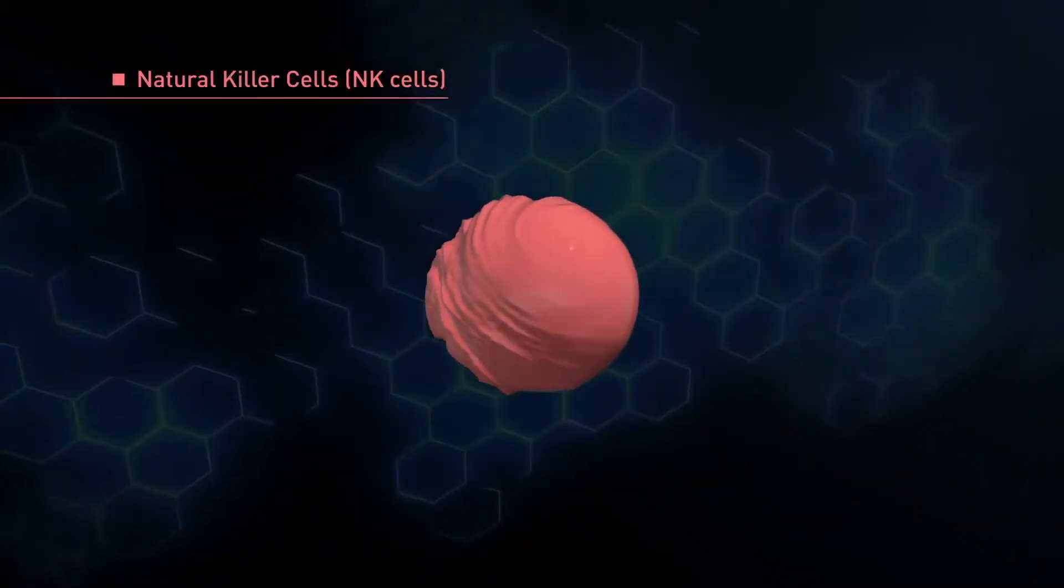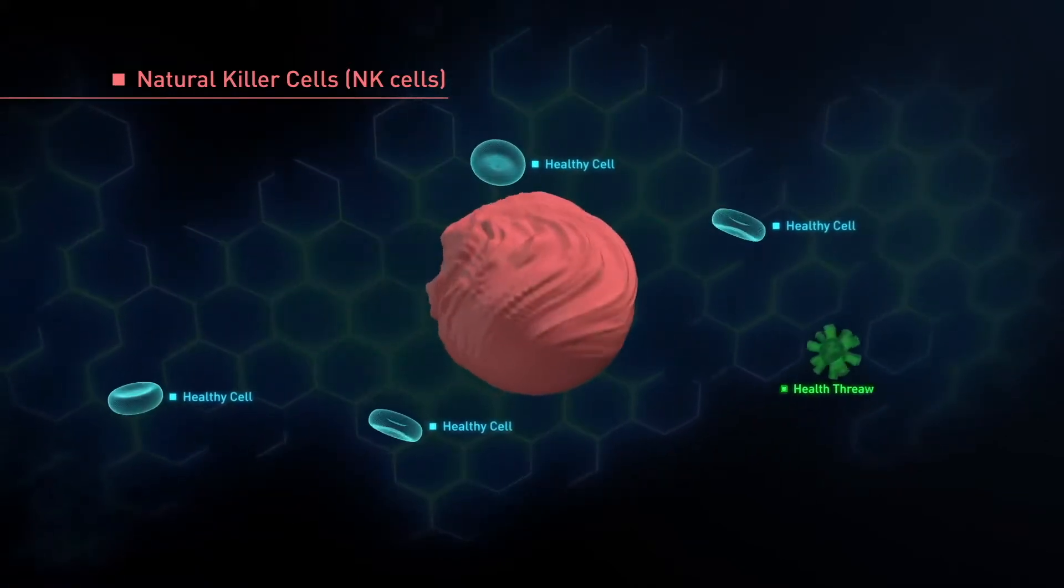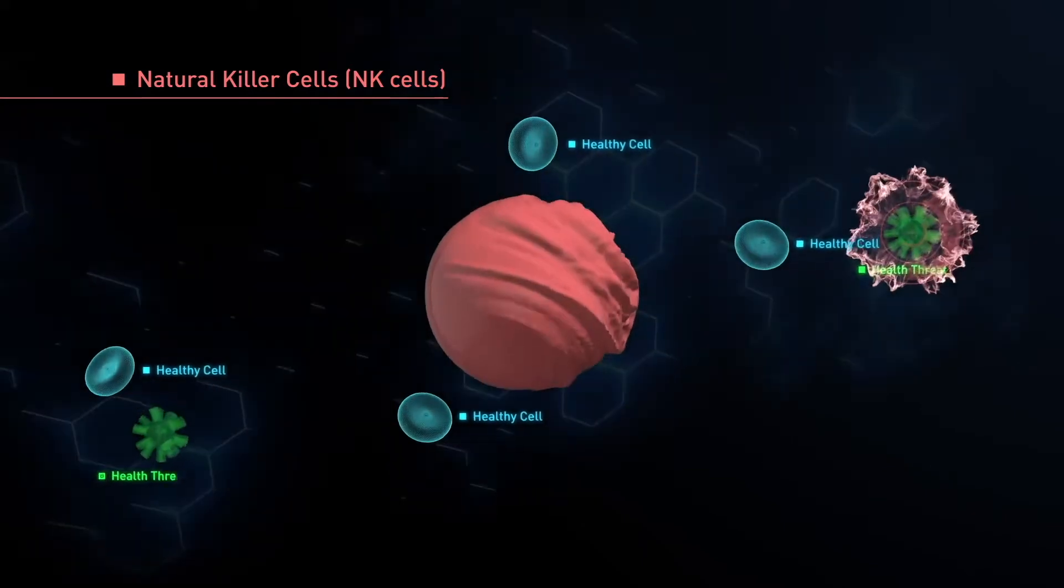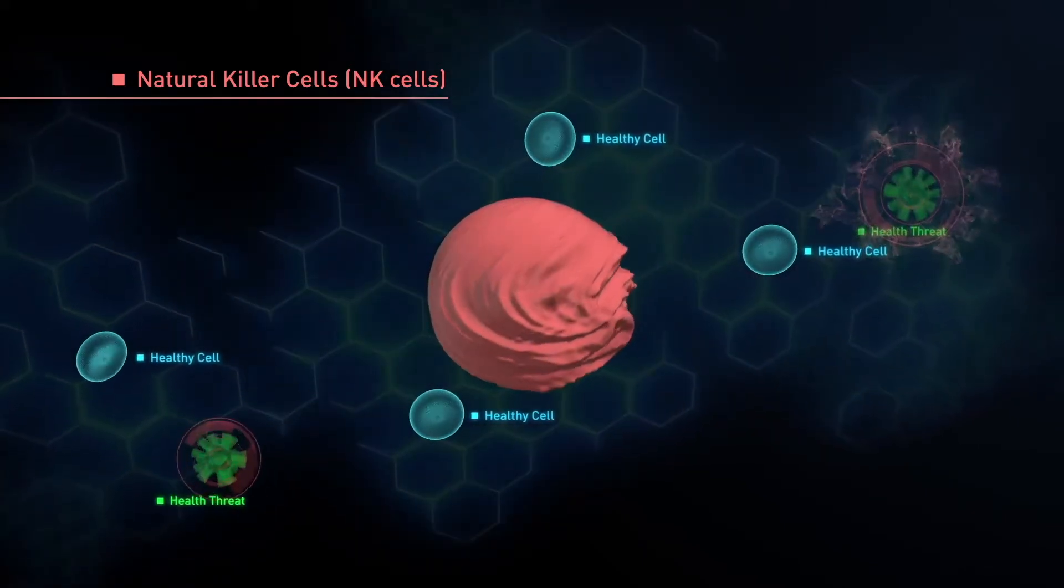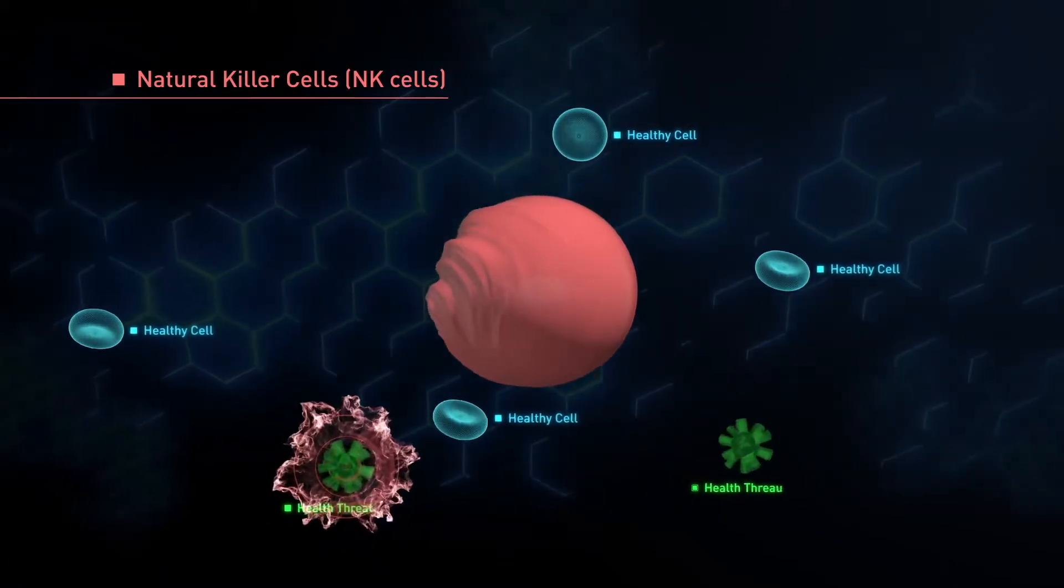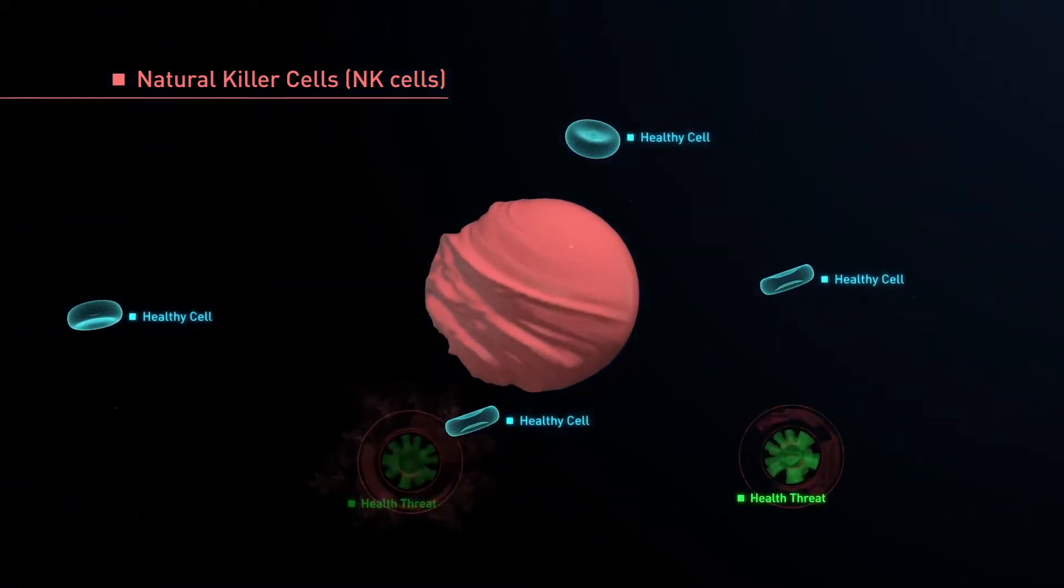Natural killer cells, or NK cells, do exactly what their name suggests. They detect and destroy harmful invaders. NK cells have the uncanny ability to identify health threats with little to no information. They're the special forces of the immune system.